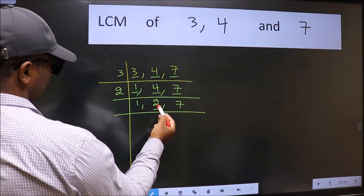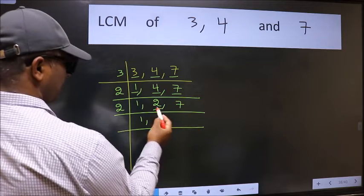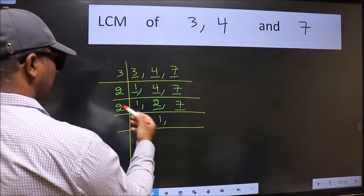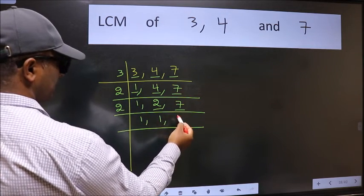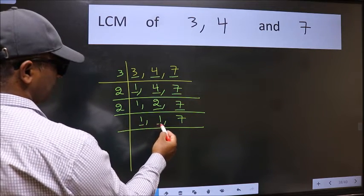Now here we have 2. 2 is a prime number, so 2 goes into 2 once. The other number 7 not divisible by 2, so we write it down as it is. Now we got 1 here and here.